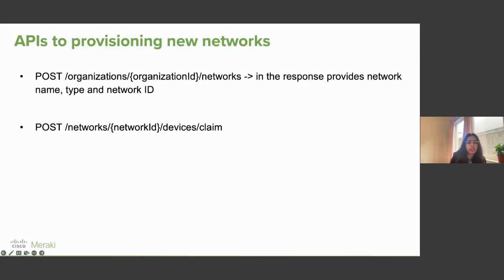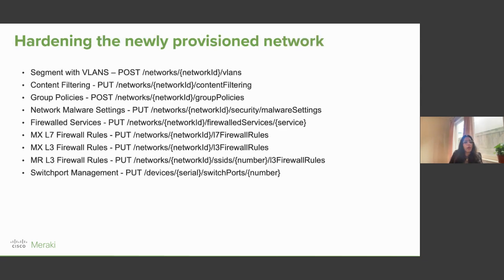The first APIs available are for provisioning new networks and claiming devices. The first API returns a network name, type, and network ID in the response. You can then use that network ID in the second API call to claim your devices. These two APIs can be used while provisioning new networks. Additional APIs are available for making the network secure — for example, content filtering to restrict content, creating group policies, firewall settings, and more.